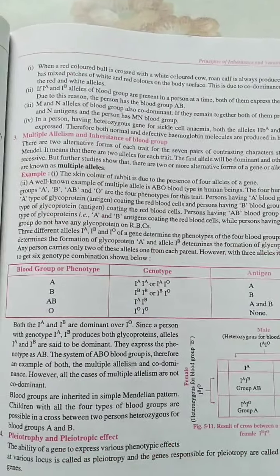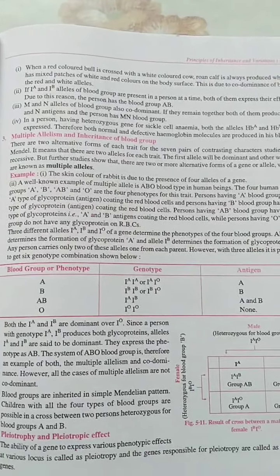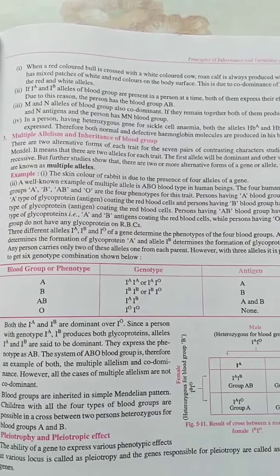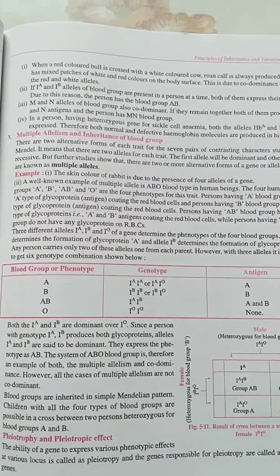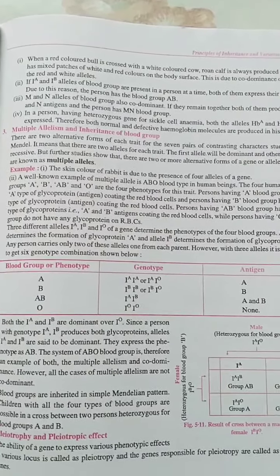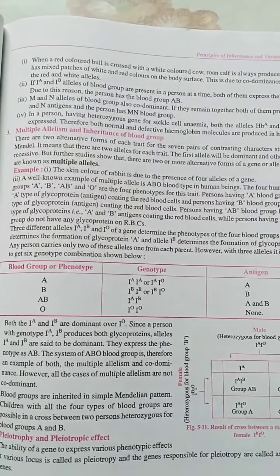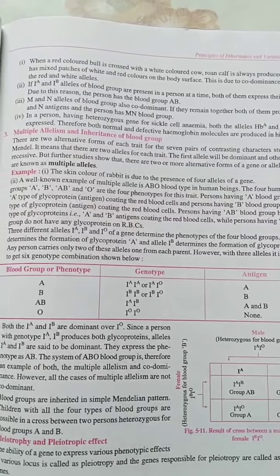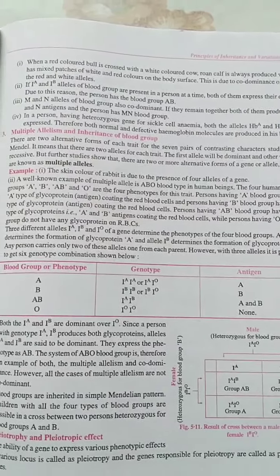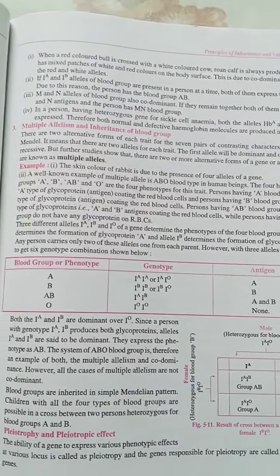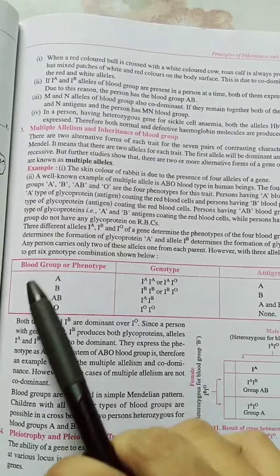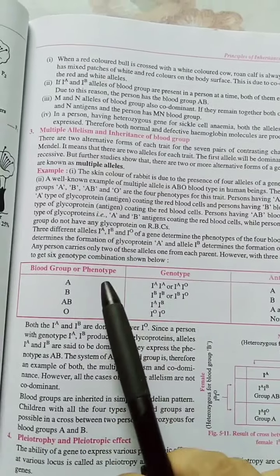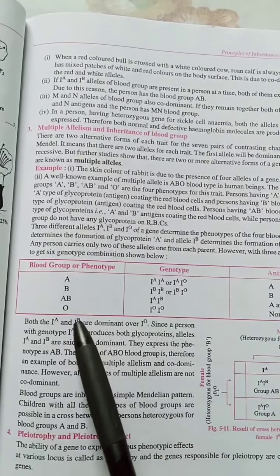Moving to multiple allelism — the coat color example — there are different types of blood groups: A, B, AB, and O.